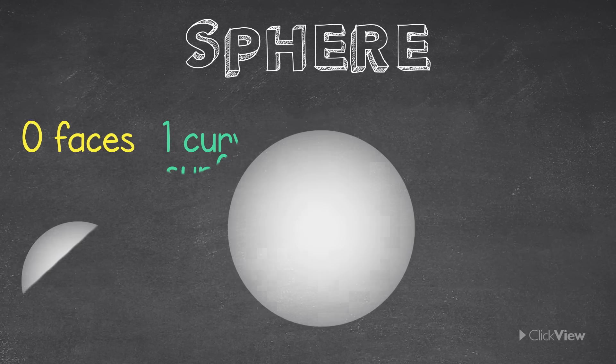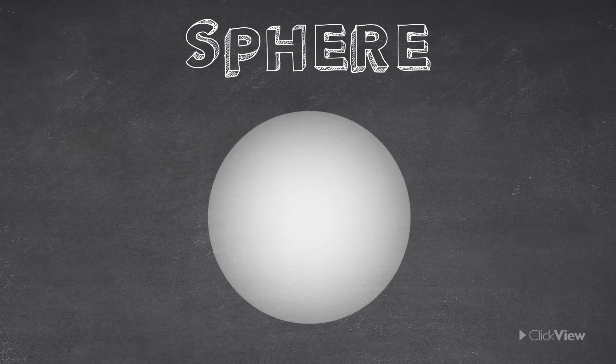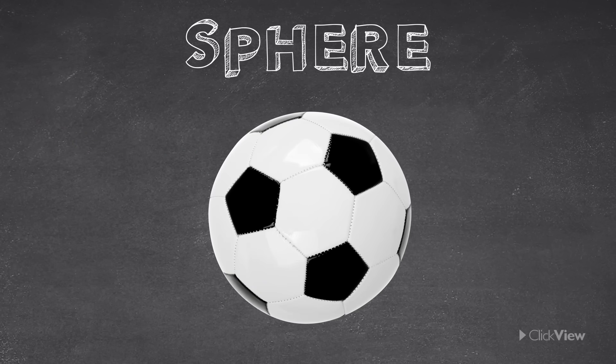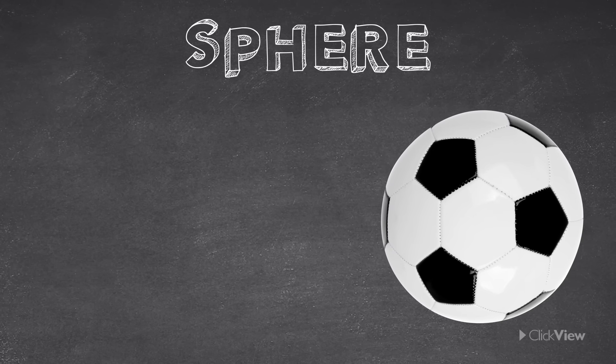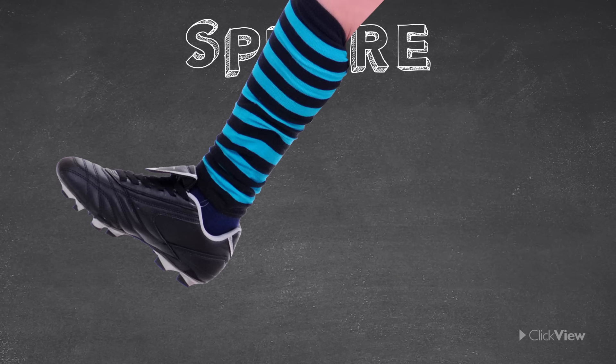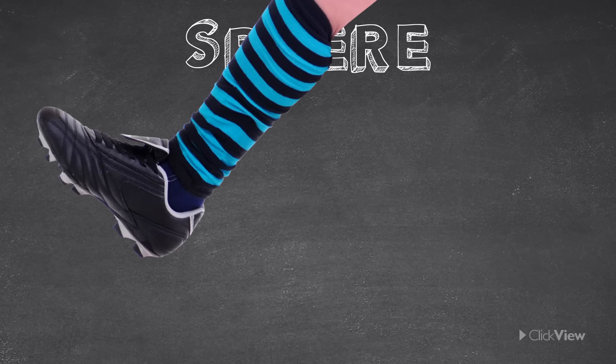That's what makes a sphere the perfect shape for a ball. It rolls around easily in any direction, and you can kick it without banging your toe on a sharp corner.